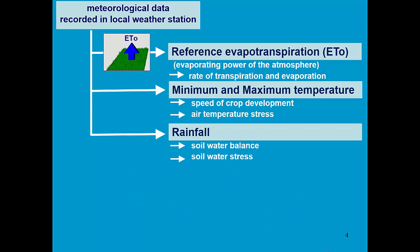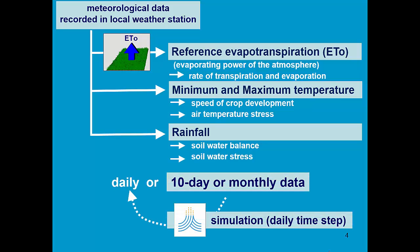Next to ET node and minimum and maximum temperature, AquaCrop requires also rainfall data to update daily its soil-water balance and to simulate soil-water stresses. Also here rainfall data can be entered 10-daily or monthly. Once again, procedures in AquaCrop will convert it to daily data. However, to do accurate simulations of the crop response to water stresses, daily rainfall data is really needed.